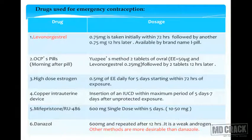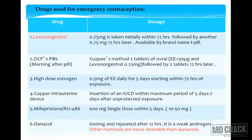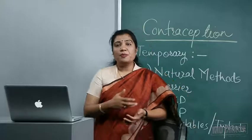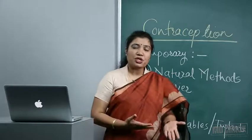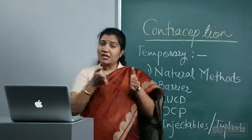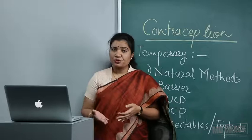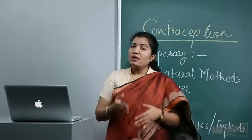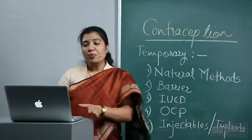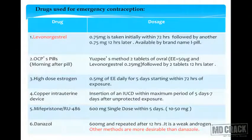Levonorgestrel alone is the most appropriate drug for emergency contraception — also called i-pill, advertised on TV. 0.75 mg is taken within 72 hours, followed by another dose after 12 hours. Two doses with a 12-hour difference. Many patients present with menorrhagia, intermenstrual bleeding, or heavy bleeding from using this without proper knowledge — it should not be used more than once a month, as these are very high progesterone doses.